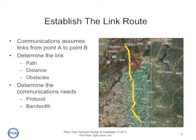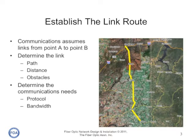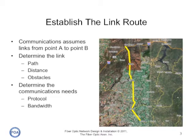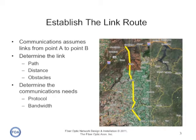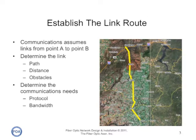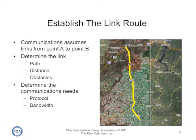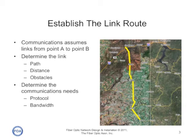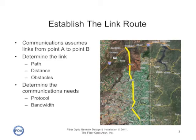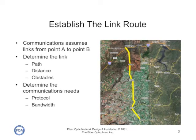The next step is to establish the route of the link, to determine the path from point A to point B that our network will run, how far it is, and what obstacles are in its way. On an outside plant link, we might do that on a satellite photo like we show here, and on a premises link, we would do it on a CAD drawing of a building. Then we want to determine the communication needs, so we know what kind of equipment will be run on this network.